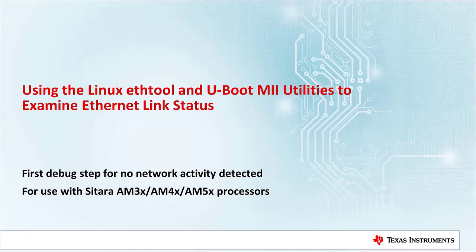Hello, and welcome to this video about using Linux Eth Tool and the U-Boot MII tools to examine Ethernet link status. This is the first debug step for when no network activity is detected. Before network data can pass, an Ethernet link must be established between the two link partners. The link status for a MAC interface must be detected by each partner. This video will show how to examine that link status.